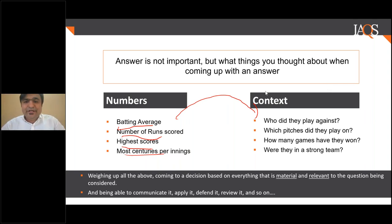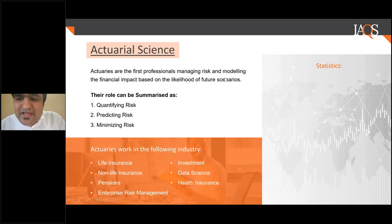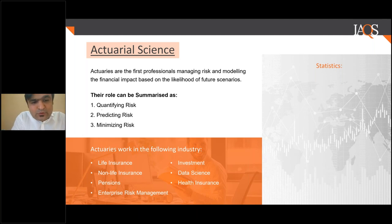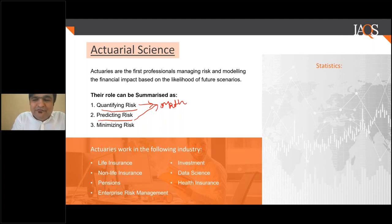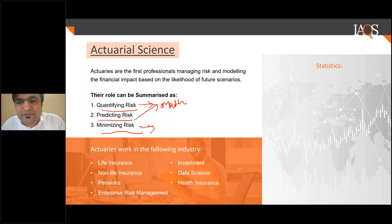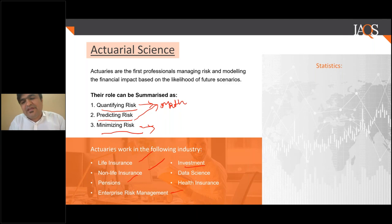Actuarial science is a risk management and risk quantification profession. What actuaries do is try to quantify risk using mathematical models. Predicting the risk is equally important, and finally, when you know the risk and its impact, how do you minimize, mitigate, or avoid it — that is the basic goal of an actuary. They work in life insurance, non-life insurance, pensions, enterprise-wide risk management, investments, health, and data.